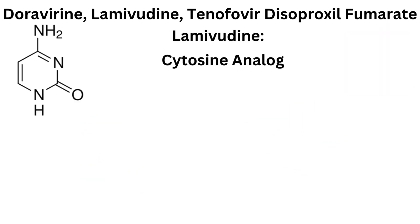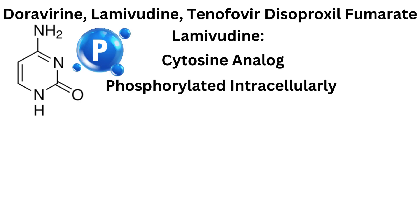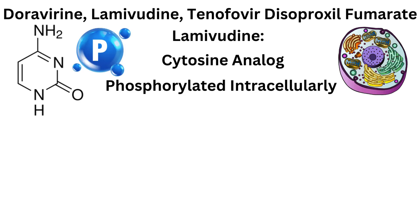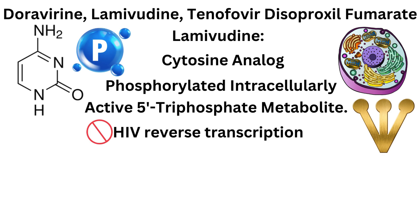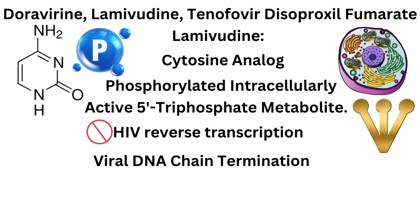Lamivudine is a cytosine analogue that is phosphorylated intracellularly to its active 5-triphosphate metabolite. The principal mode of action is inhibition of HIV reverse transcriptase via viral DNA chain termination.